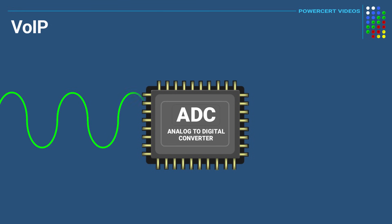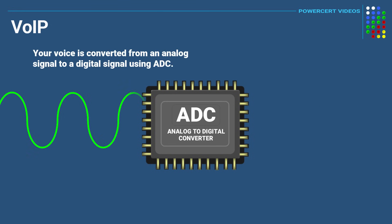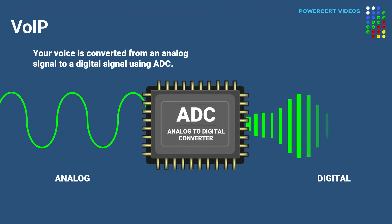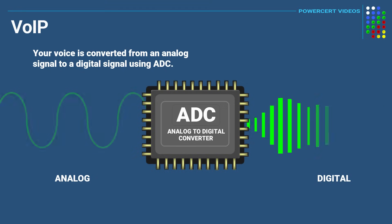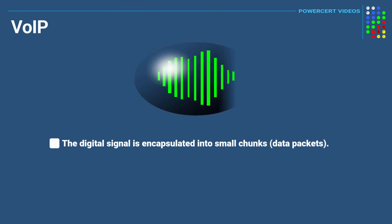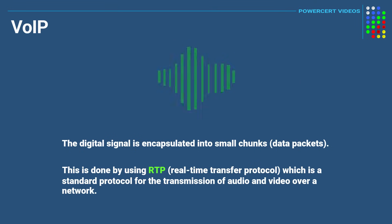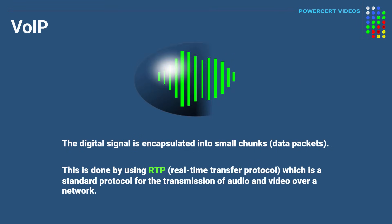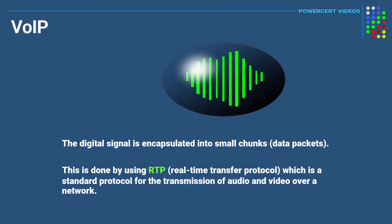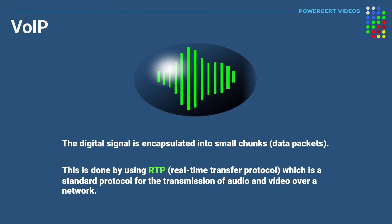After the connection is made, as you speak into the microphone your voice is converted from an analog signal to a digital signal using ADC, or Analog to Digital Converter. That digital signal is then encapsulated into small chunks called data packets using RTP, which stands for Real-Time Transfer Protocol — a standard protocol for the transmission of audio and video data over a network.